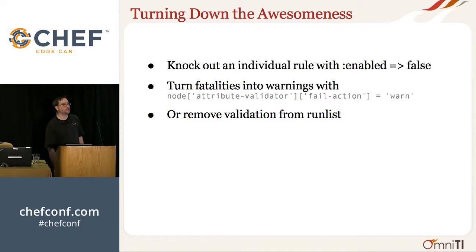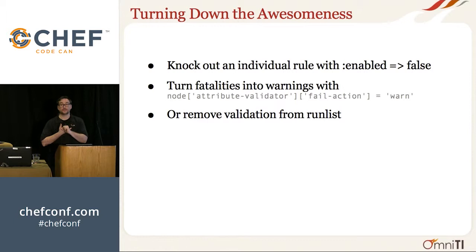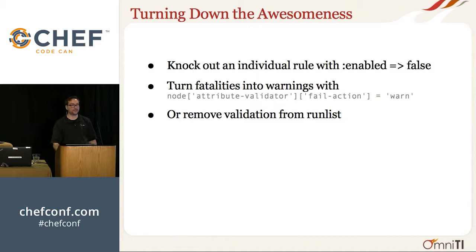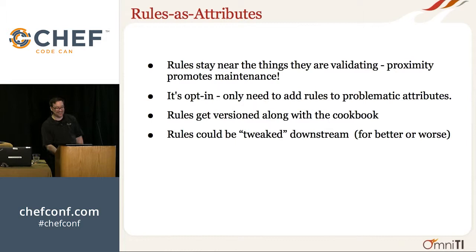How to turn down the awesomeness. Any time you add something that could blow up, you want to be able to turn it off. By default, its job is to halt the convergence and throw an exception. If you don't want that, you can override a specific rule and set 'enabled false' to knock out one rule. You can also turn the fatalities into warnings — it'll just emit log messages, though if your nodes are out there and you don't have logs coming back to you, you'll never know. Or you can simply remove the validation from the run list.